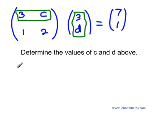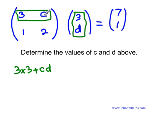We multiply corresponding entries, so 3 times 3 — that's the first entry, first by first. Then we look at the second entries: C times D, which gives us CD. We put a plus sign in between the products, so it's 3 times 3 plus C times D. It's the row of the first matrix multiplied by the column of the second matrix.